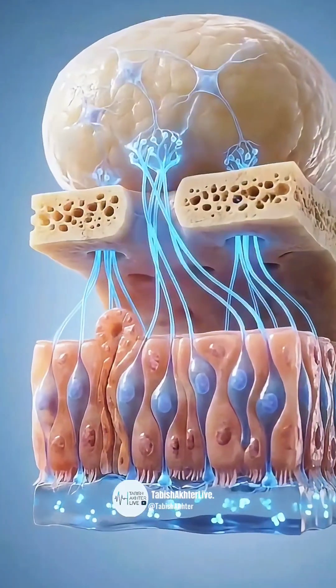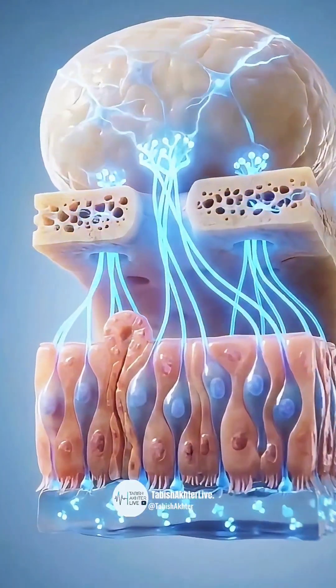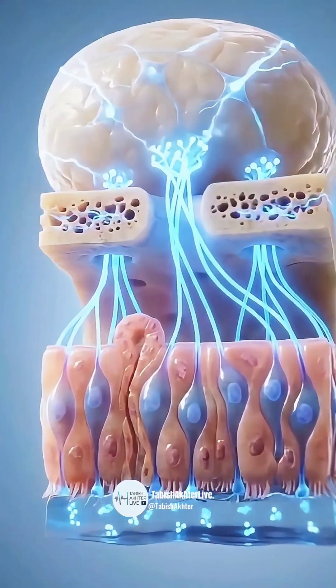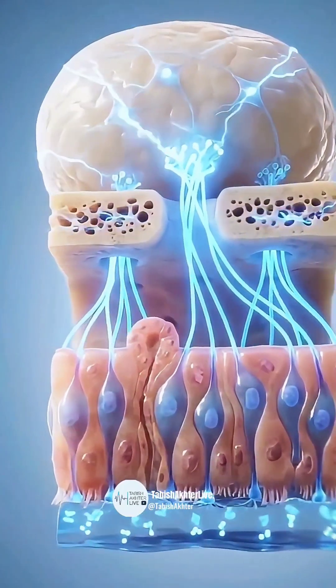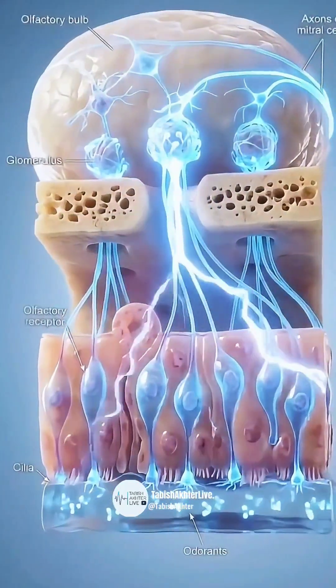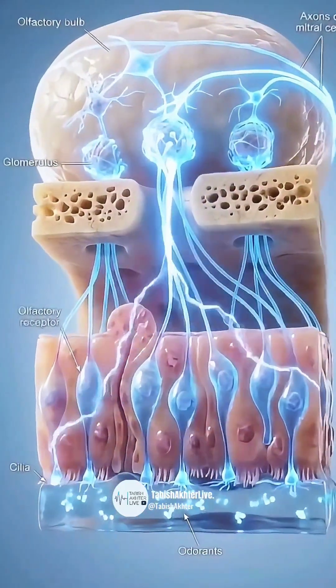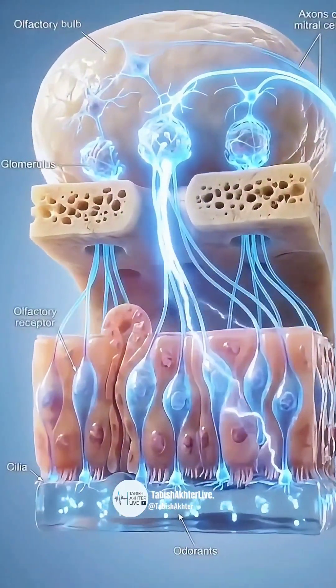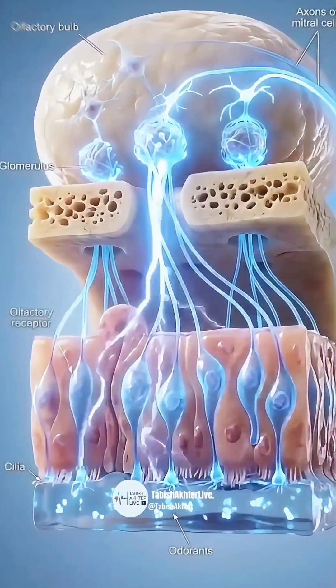The signal travels through the cribriform plate of the skull and enters the olfactory bulb. Here in the glomerulus, the nerve endings synapse with mitral cells.